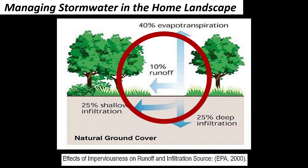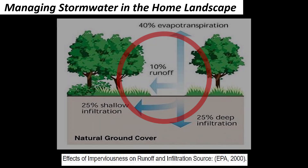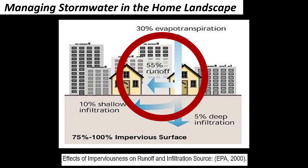In the natural environment, only 10% of stormwater ends up as runoff, whereas in the urban environment, up to 55% of stormwater ends up as runoff.